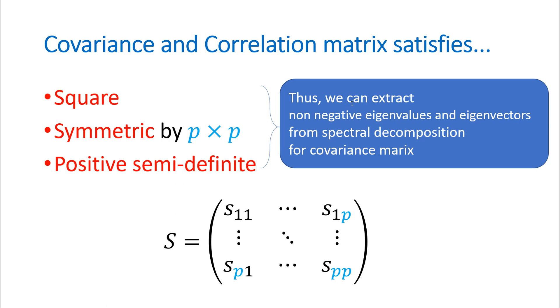So we can extract non-negative eigenvalues and eigenvectors from spectral decomposition for covariance matrix because covariance matrix satisfies these three conditions.